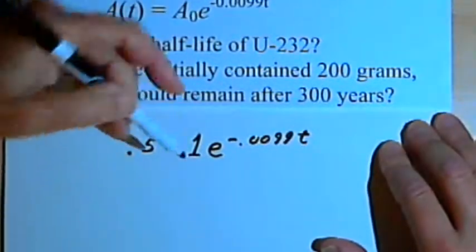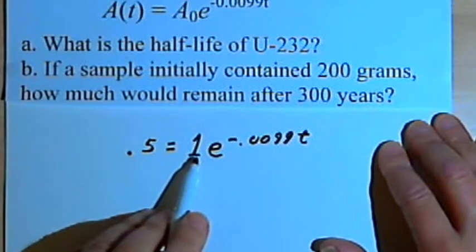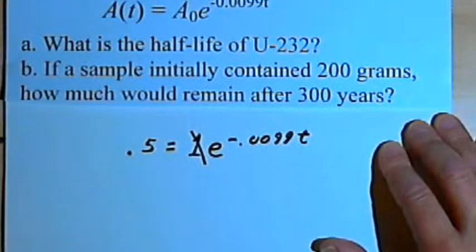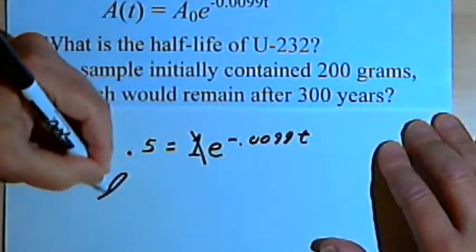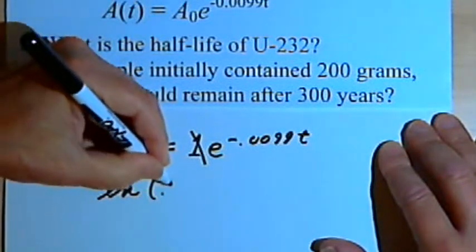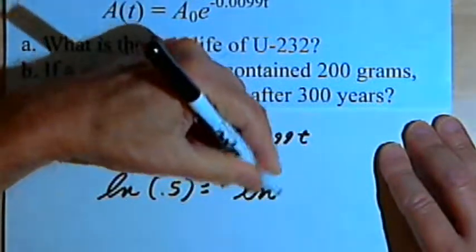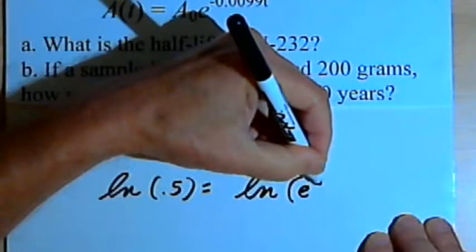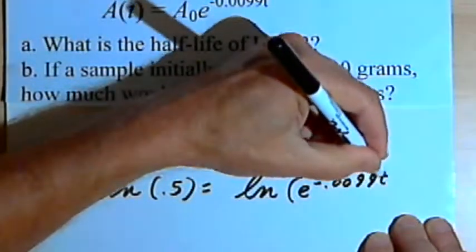So I'm going to do this by taking the natural log of both sides. To begin with, maybe what I want to do is cross out this 1, since it's really not necessary there. Now I'll take the natural logs, so I'm going to have ln of 0.5 equals ln, the natural log of e to the negative point 0.0099t.